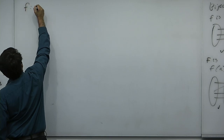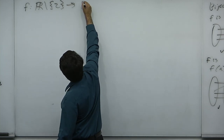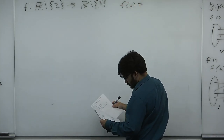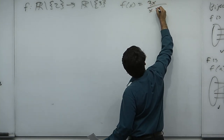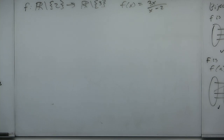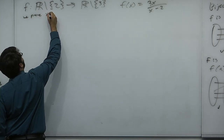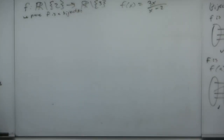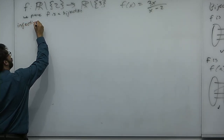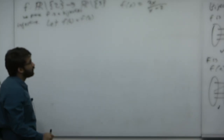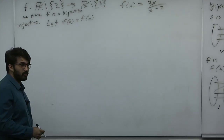Let's do a more complicated example. Consider the function defined from the reals except 2 to the reals except 3, where F of X equals 3X over X minus 2. We've removed 2 from the domain and 3 from the codomain so we won't divide by 0. Suppose we want to prove this function is a bijection. We prove F is a bijection by first proving it is injective.